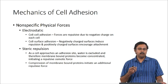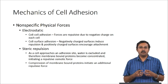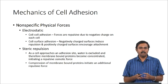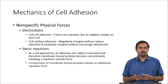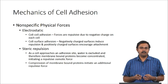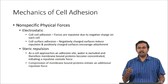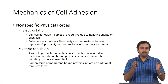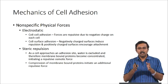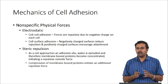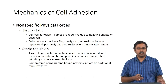Steric repulsion is seen when a cell approaches an adhesion site — what happens is water is excluded. Therefore, membrane-bound proteins become concentrated, which causes a repulsive osmotic force. The compression of the membrane-bound proteins initiates an additional repulsive force, which is seen as steric repulsion. Again, all these forces are more active when the distance between the two surfaces — which could be cell surfaces or a cell and matrix surface — is at different levels. At some particular distances, electrostatic effects have a bigger role, whereas at other distances it will be steric repulsion.